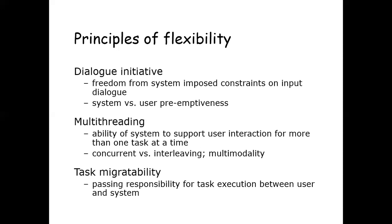The next principle is multi-threading. A thread of a dialogue is a coherent subset of that dialogue. Multi-threading of the user-system dialogue allows user interaction to support more than one task at a time. Concurrent multi-threading allows simultaneous communication of information pertaining to separate tasks. Interleaved multi-threading permits a temporal overlap between separate tasks but stipulates that at any given instant, the dialogue is restricted to a single task.